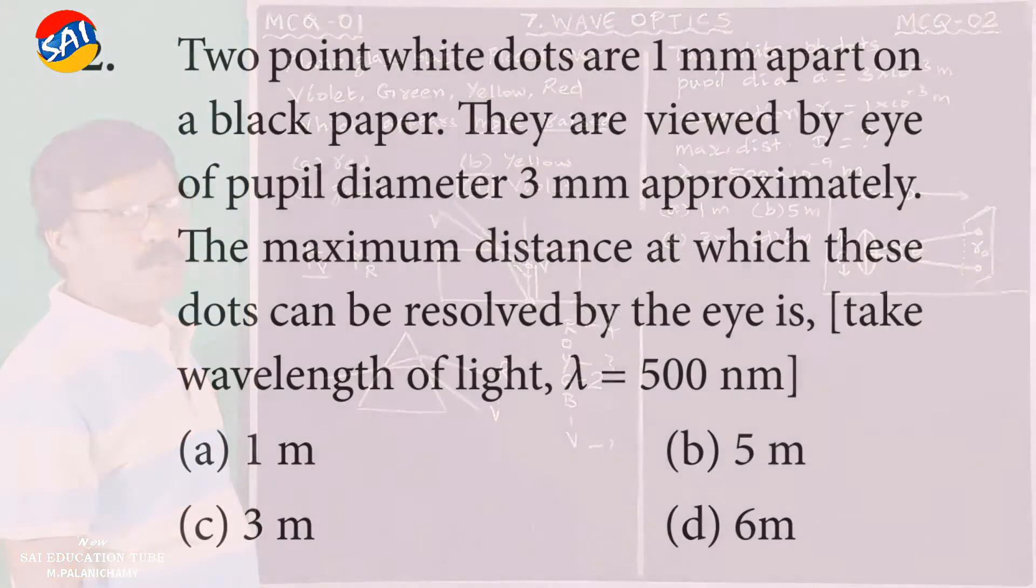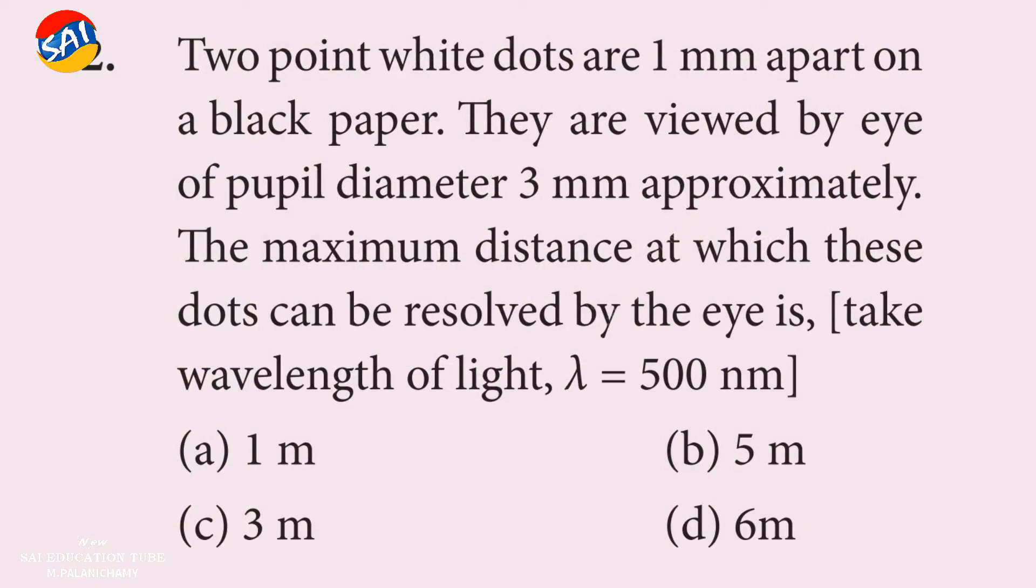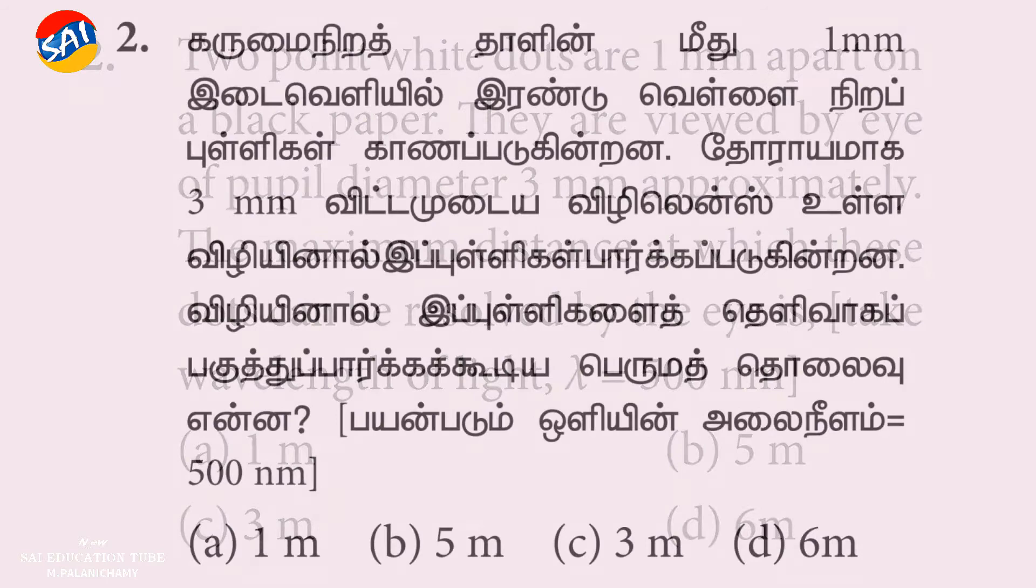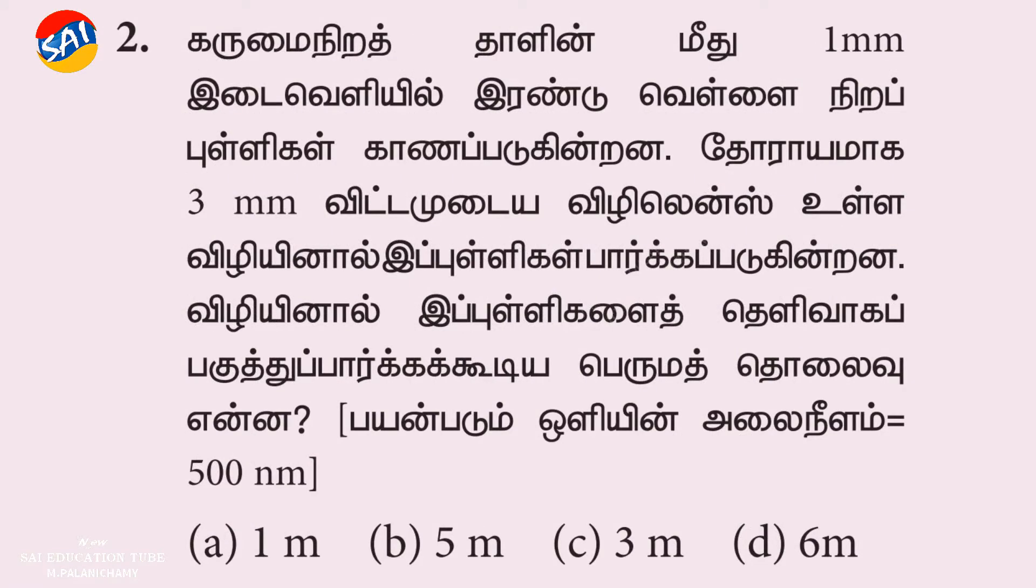Now let's get MCQ 2. Two white dots are 1 mm apart on a black paper. They are viewed by an eye with pupil diameter 3 mm approximately. The maximum distance at which these dots can be resolved by the eye is? Take wavelength of light lambda equal to 500 nanometer.